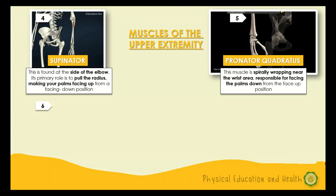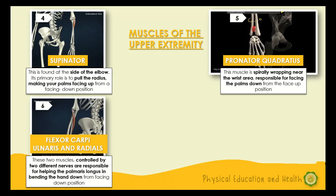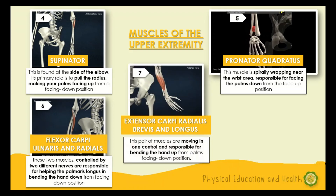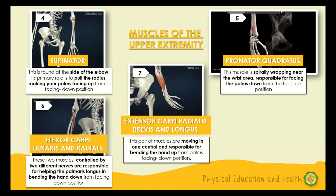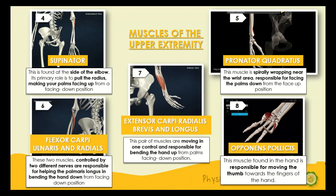Number five is the pronator quadratus, which spirally wraps near the wrist area and is responsible for facing the palm down from a face-up position. Number six is the flexor carpi ulnaris and radialis — these two muscles, controlled by two different nerves, are responsible for helping the palmaris longus in bending the hand to a facing-down position. Number seven is the extensor carpi radialis brevis and longus — this pair of muscles moves in one control and is responsible for bending the hand up from a palms-facing-down position. Number eight is the opponens pollicis, found in the hand, responsible for moving the thumb towards the fingers of the hand.